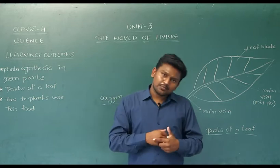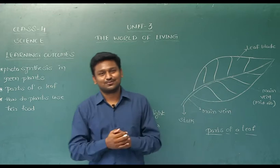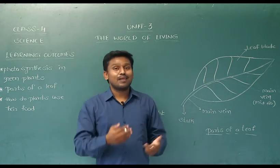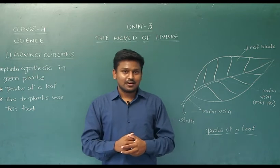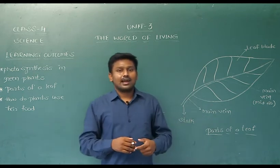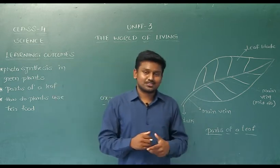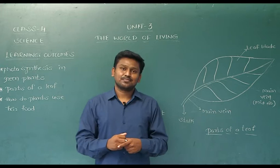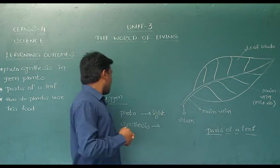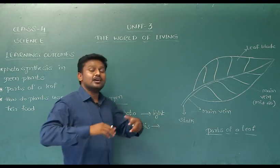Plants, they can produce their own food. But we cannot produce our own food. So we are depending on the plants. We are omnivores. We depend on the plants and we depend on animals like goat, sheep, and chicken. Photo means light, synthesis means putting together.